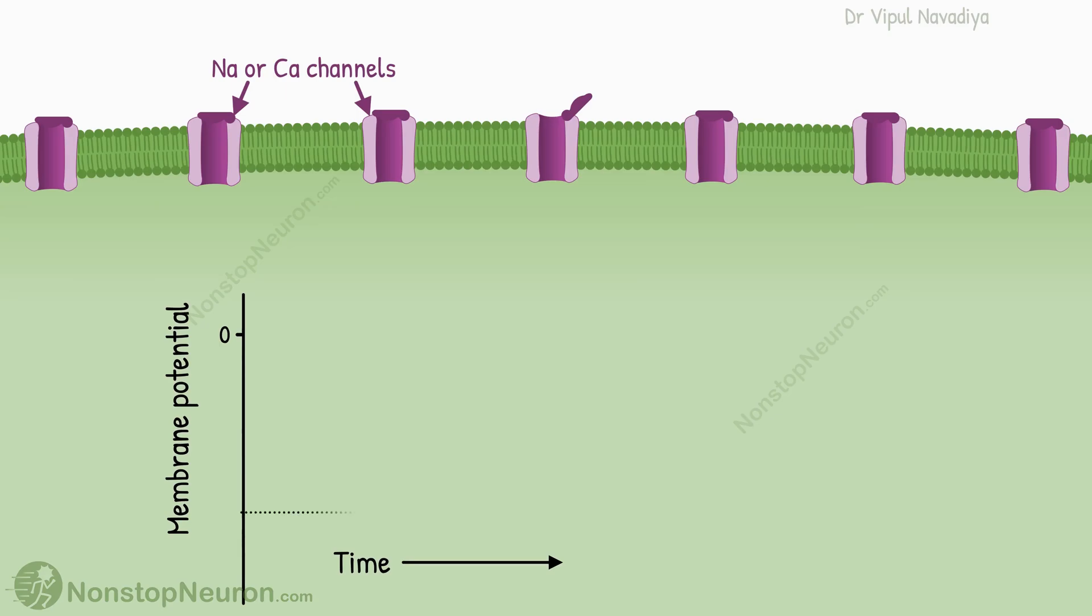First of all, the lowest membrane potential in such tissues is minus 60 to minus 70 millivolts. This is higher than the usual minus 90 millivolts that we see in many cells. This way, the potential is already closer to the threshold.